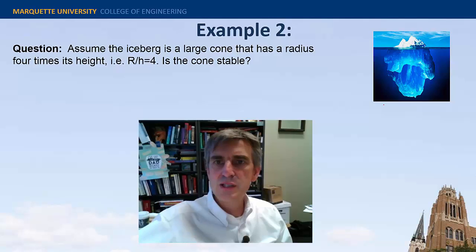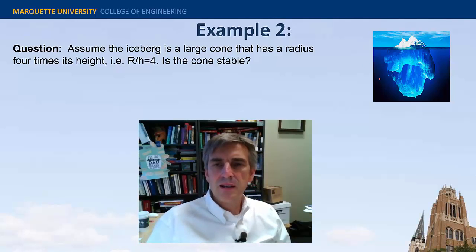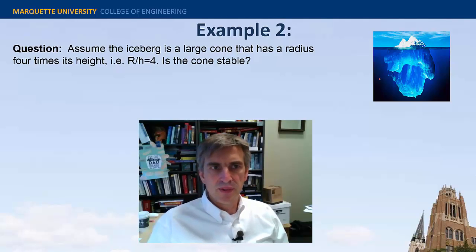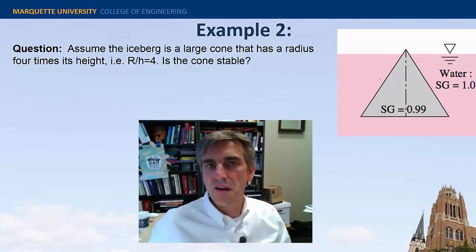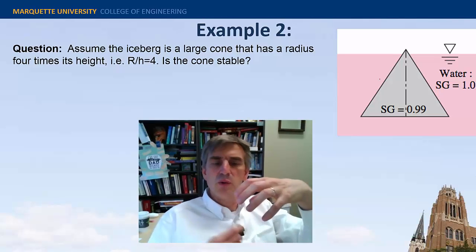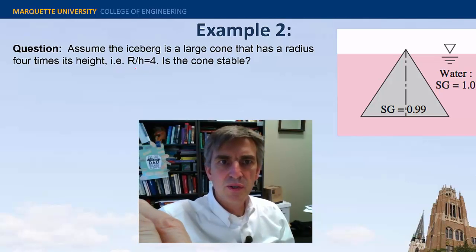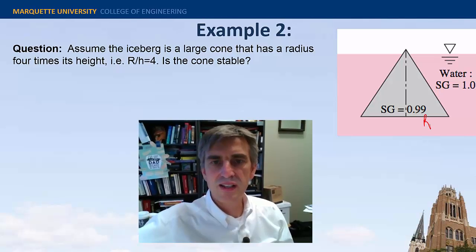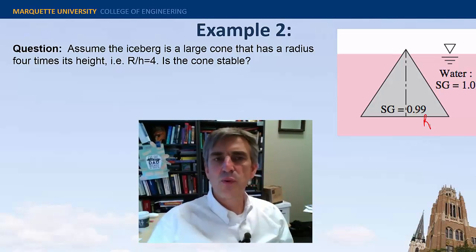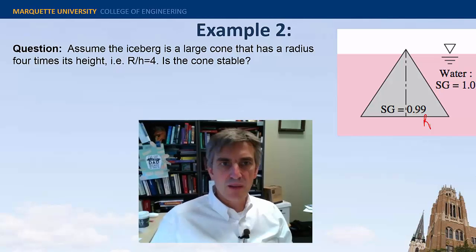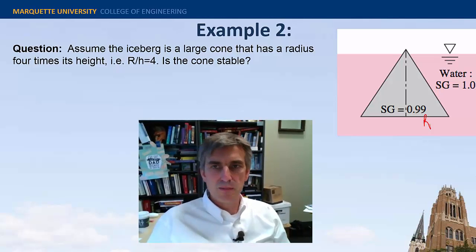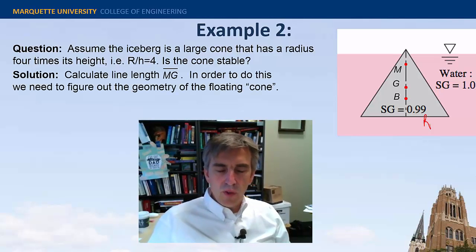Let's do another example. Let's consider this iceberg here. And let's ask the question, is the iceberg stable or unstable? And let's replace the iceberg with maybe a cone, a cone that has a circular cross-section. So, the radius divided by the height, so the radius is this R right there, is four. So, that gives you some idea of the geometry. Is this cone stable?